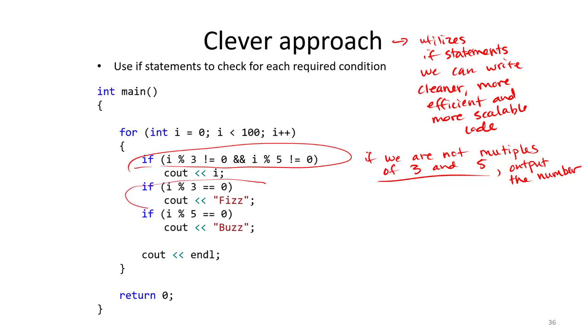Notice, if we're a multiple of 3, output Fizz. And if we're a multiple of 5, output Buzz.